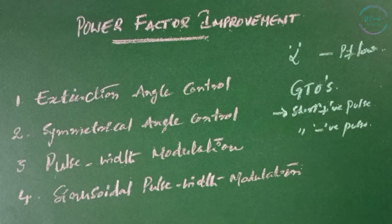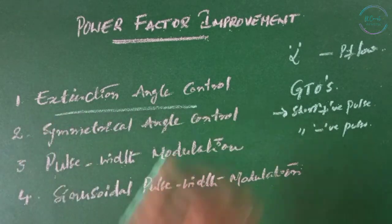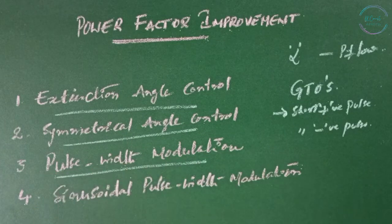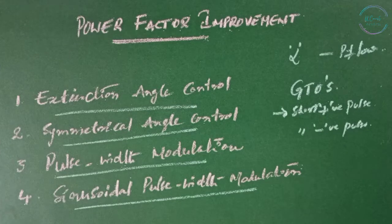The basic techniques of forced computation for AC to DC converters are classified as extinction angle control, symmetrical angle control, pulse width modulation, and sinusoidal pulse width modulation. Now I will see in detail each of these techniques.